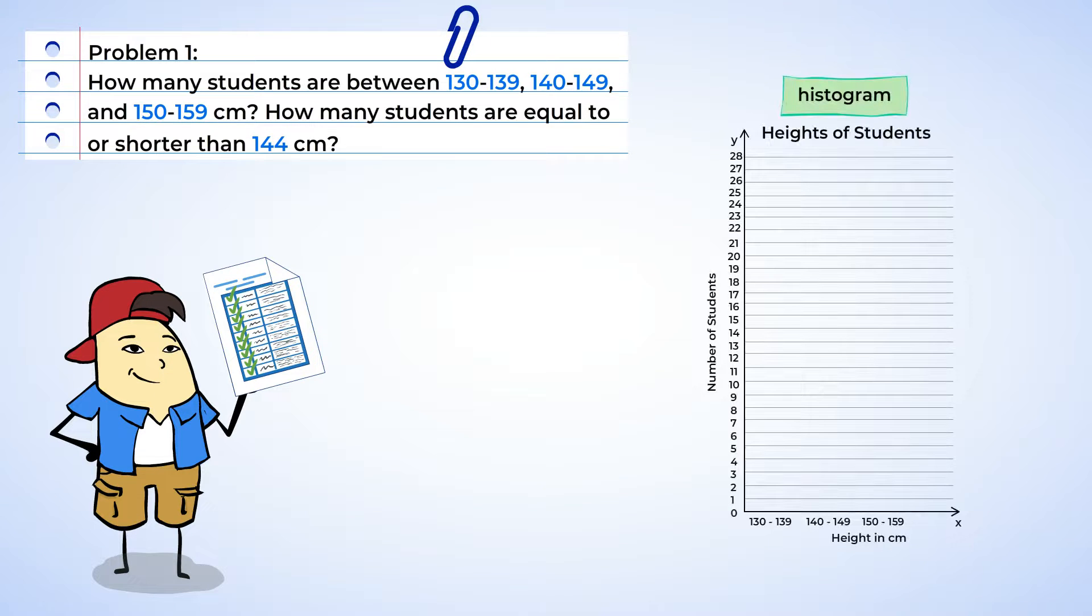Well, let's create a histogram to represent the data, but this time, we need to make sure both questions can be answered. Now, to answer the first question, we could make our buckets 130 to 139, 140 to 149, and 150 to 159 centimeters.